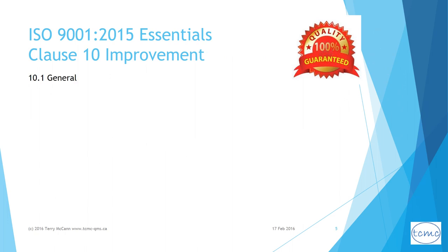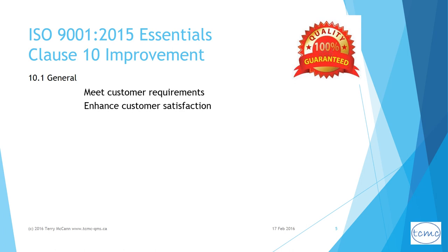Clause 10 improvement. 10.1 general. This clause on improvement begins with a statement about improvement in general and describes the kinds of improvement that should be acted upon at a minimum: firstly, actions necessary to meet customer requirements — which seems obvious — but then also actions necessary to enhance customer satisfaction. It is thus a requirement of the standard not only to meet and deliver customer requirements but also to enhance customer satisfaction where opportunities to do so can be determined. Clause 10 clearly sees improvement as covering corrections and corrective actions as well as seizing opportunities to make something that is good even better.